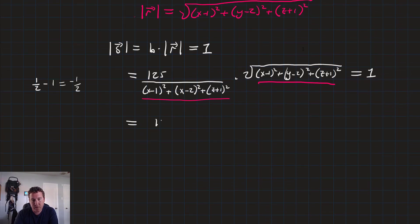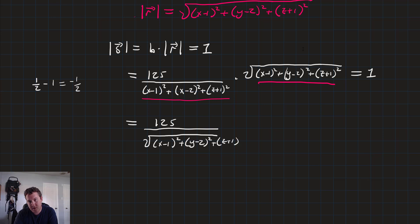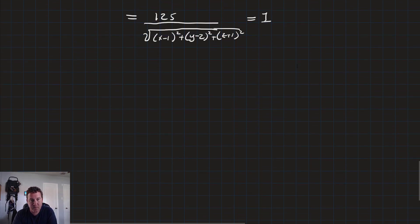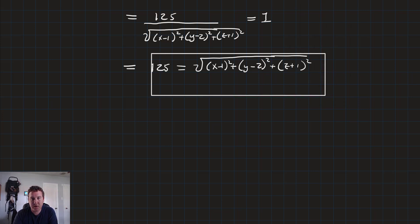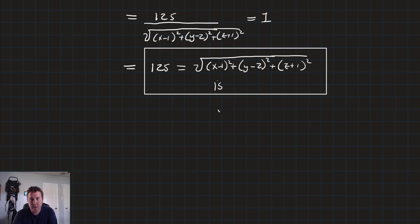Notice this example is set up nicely — the denominator and the square root are the same expression, so they partially cancel. That translates into 125 over the square root of (x minus 1) squared plus (y minus 2) squared plus (z plus 1) squared equals 1. Rearranging, that gives us 125 equals the square root of (x minus 1) squared plus (y minus 2) squared plus (z plus 1) squared. That's our surface equation — along this surface, the magnitude of S is equal to 1.